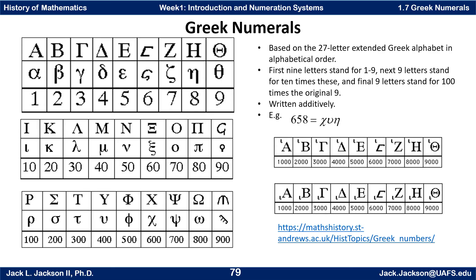The next nine letters represent 100 times the original. In alphabetical order, rho is 100, sigma is 200, and so forth: 100, 200, 300, 400, 500, 600, 700, 800, 900. So with at most three symbols, you can represent every natural number from 1 to 999 using only one, two, or three symbols.